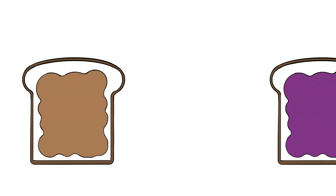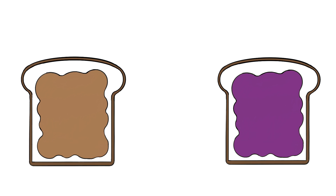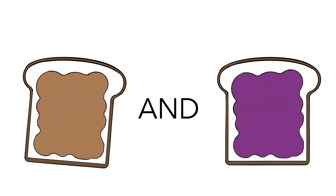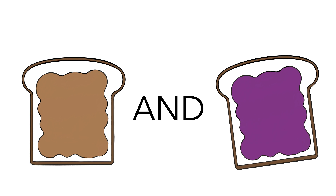If you wanted to order a sandwich that had both peanut butter and jelly, you would use AND. This means your sandwich would have both peanut butter and jelly on it.